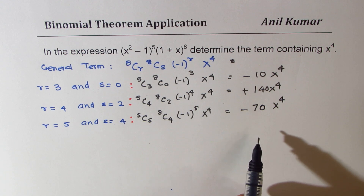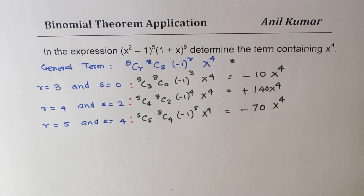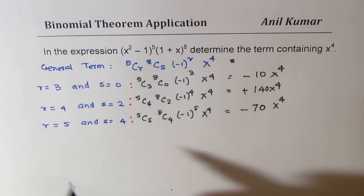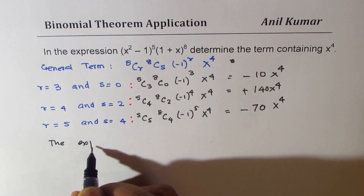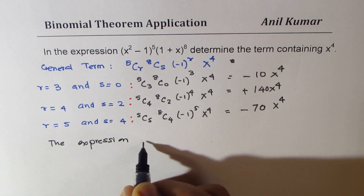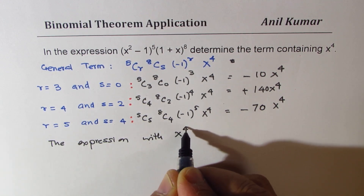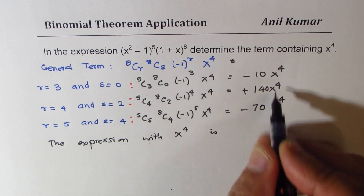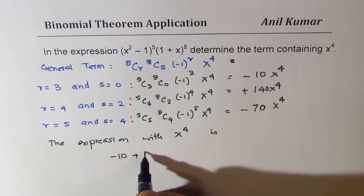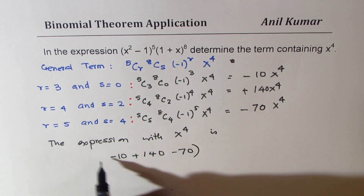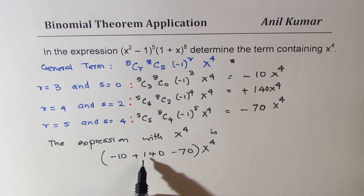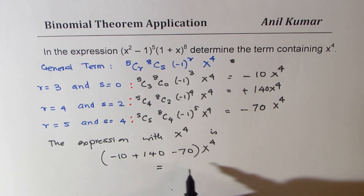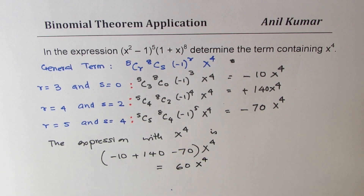Combining the three terms, the coefficient of x^4 is -10 + 140 - 70 = 60. So the term with x to the power of 4 is 60x^4. That is the solution.